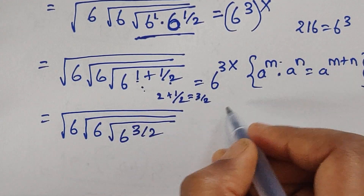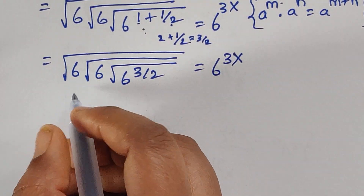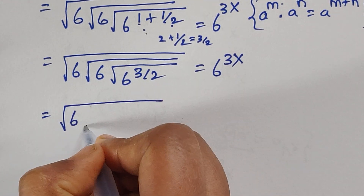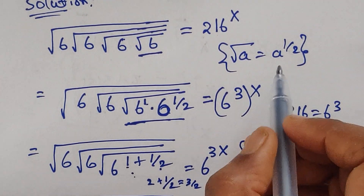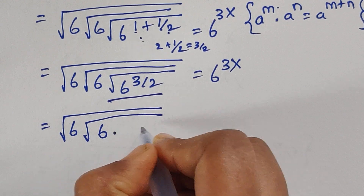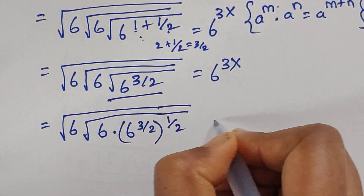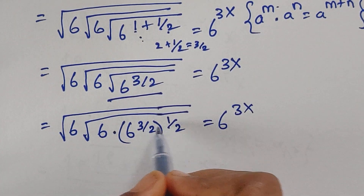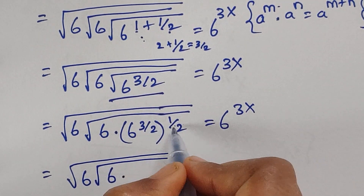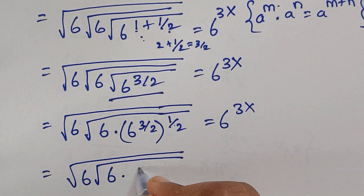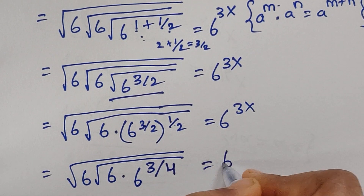So we get 6 to the power of 3 by 2 equal to 6 to the power of 3x. Now again using the formula, we write 6 to the power of 3 by 2, whole to the power of 1 by 2, equal to 6 to the power of 3x. Multiplying these two terms: 3 times 1 is 3, and 2 times 2 is 4. So we get 6 to the power of 3 by 4, equal to 6 to the power of 3x.